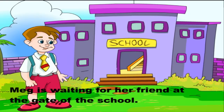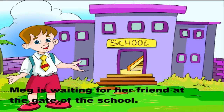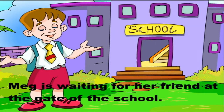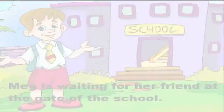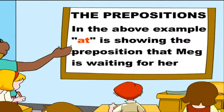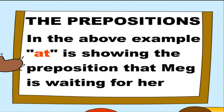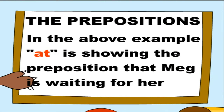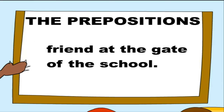Meg is waiting for her friend at the gate of the school. In the above example, 'at' is showing the preposition that Meg is waiting for her friend at the gate of the school.